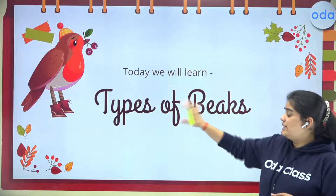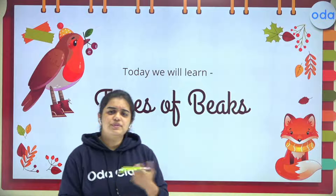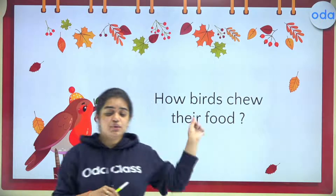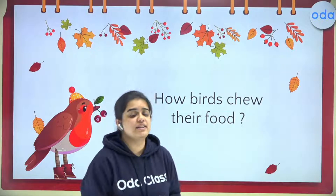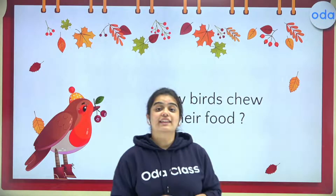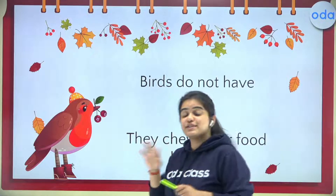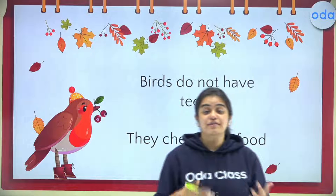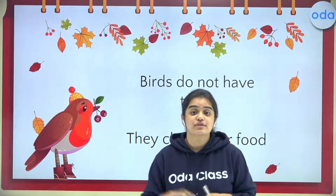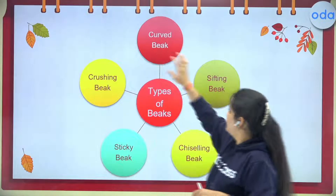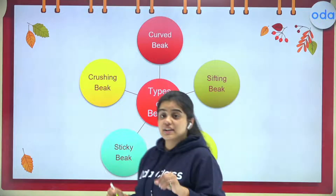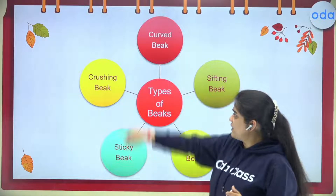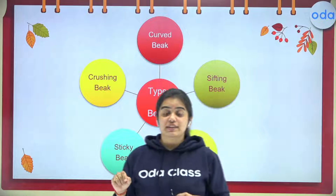Today we are going to learn about types of beak. Have you ever observed birds? I want to ask you: how can birds chew their food? Birds do not have teeth — they have only a beak to eat their food. Each and every bird has a different type of beak. Today we will be studying five types: crushing beak, curved beak, sifting beak, chiseling beak, and sticky beak.